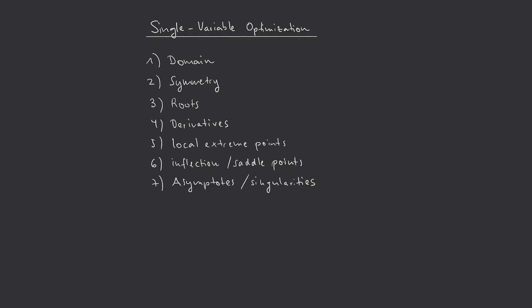The seventh and last step is to identify possible asymptotes and singularities. In this video, we perform the Single Variable Optimization for the example function f(x) = x³ divided by (2x² − 1). We will walk through all seven steps, where for each step I will tell you the method for this special function and for general functions.